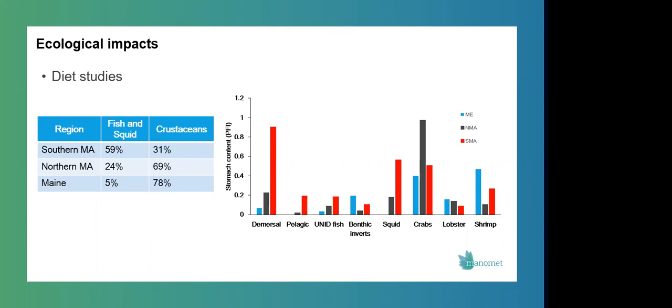So we actually see that black sea bass in southern Massachusetts eat a lot of fish and squid. So 59% of the diet is fish and squid. And then we see that fish and squid become less important as we move north. So in northern mass, black sea bass eat some fish and squid about 24% of the diet. And that in Maine, sea bass eat almost no fish and squid. And it's essentially because the species that they're eating, these fish and squid species they're eating are really not very abundant in the Gulf of Maine. So they're shifting their diet to what is abundant.